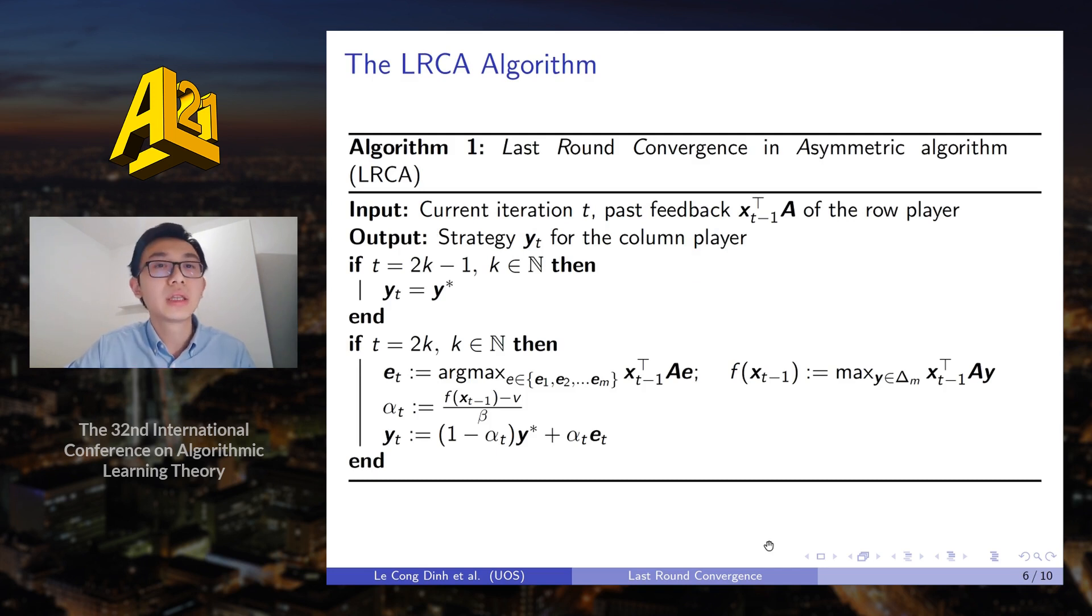Our main algorithm is last round convergence in asymmetric LRCA. So LRCA has two main important steps. In the odd rounds, the column player will play a min-max equilibrium strategy. Intuitively, by doing so it can stabilize the strategy of the row player so that in the even rounds it can exploit it.